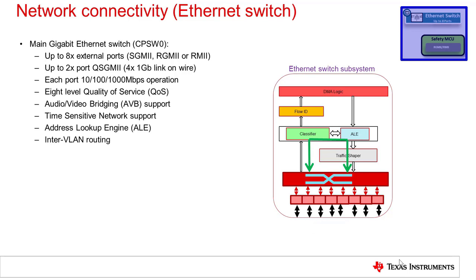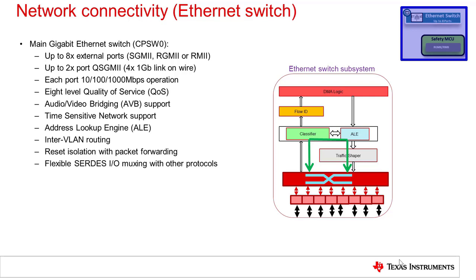A flexible address lookup engine, or ALE, and hardware classifier allow for efficient classification and routing all in hardware, including inter-VLAN routing at full line rate. Additionally, the switch provides reset isolation with packet forwarding such that port-to-port forwarding functionality is maintained even if the main domain undergoes a full SoC-level warm reset. These features can be valuable to offload CPU MIPS and achieve higher overall system performance, as well as to reduce system cost in case an external switch can be eliminated.